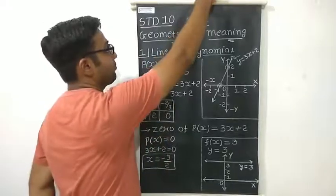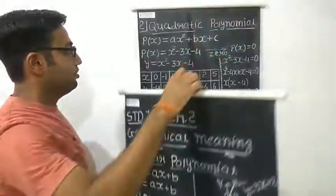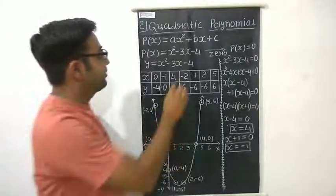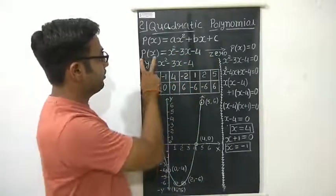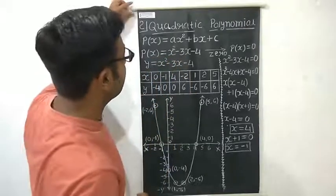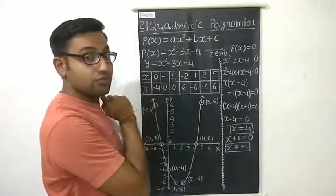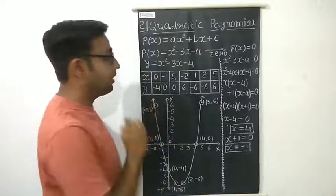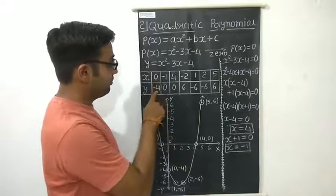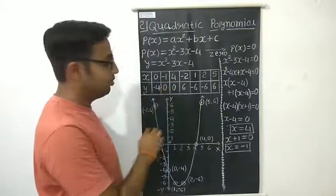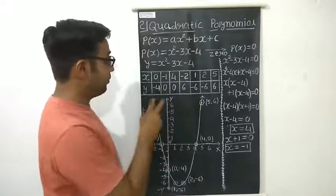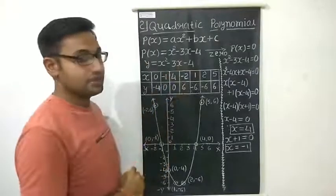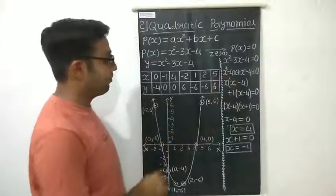Now let us look at the quadratic polynomial. The standard form is ax² + bx + c. Let us take an example: p(x) = x² − 3x − 4. By taking p(x) = y, we get y = x² − 3x − 4. By taking different values of x, we get different values of y. For x = 0, y = −4; for x = −1, y = 0; for x = 4, y = 0. So for two different values of x, y equals 0.